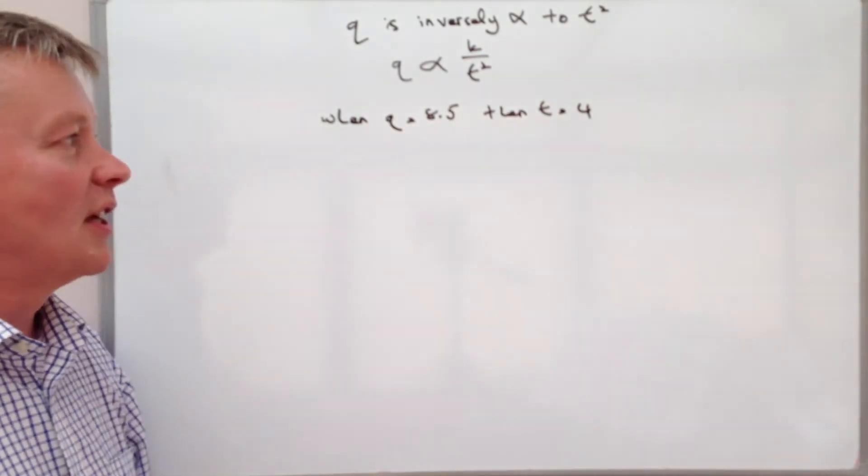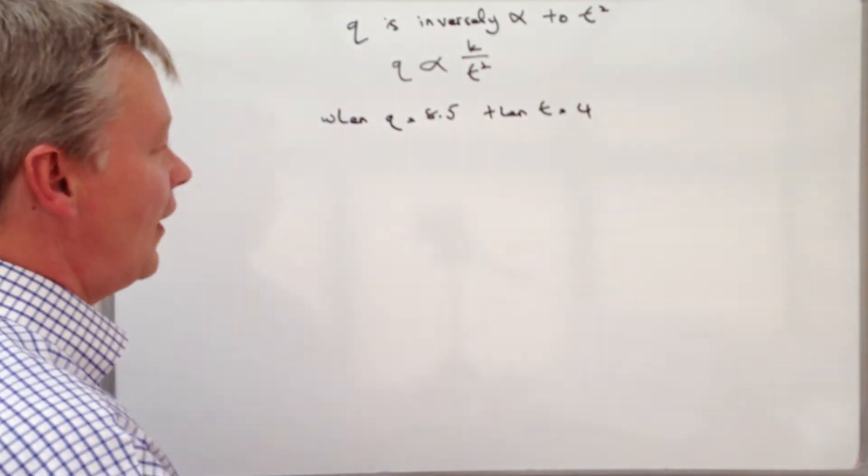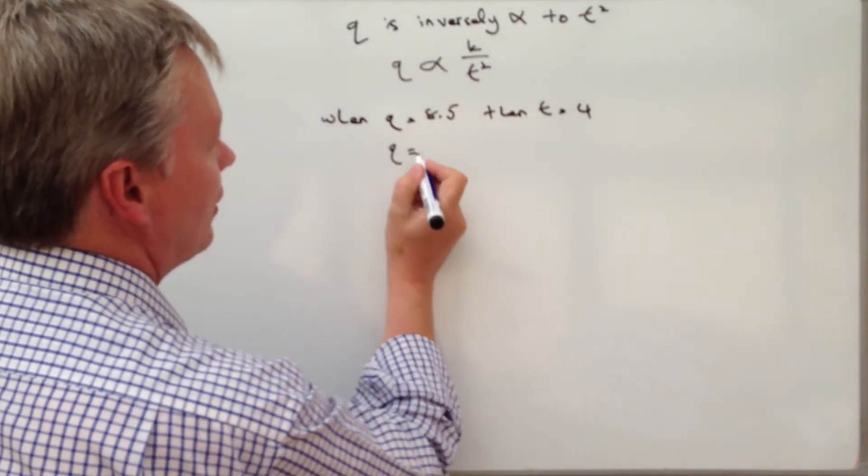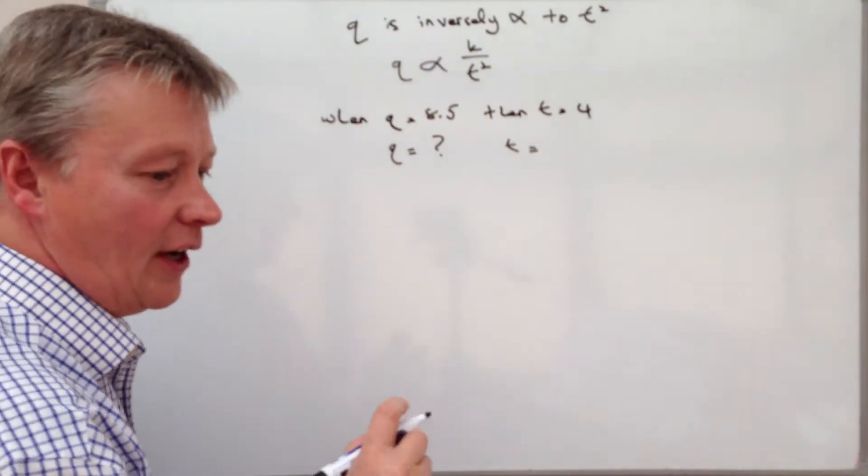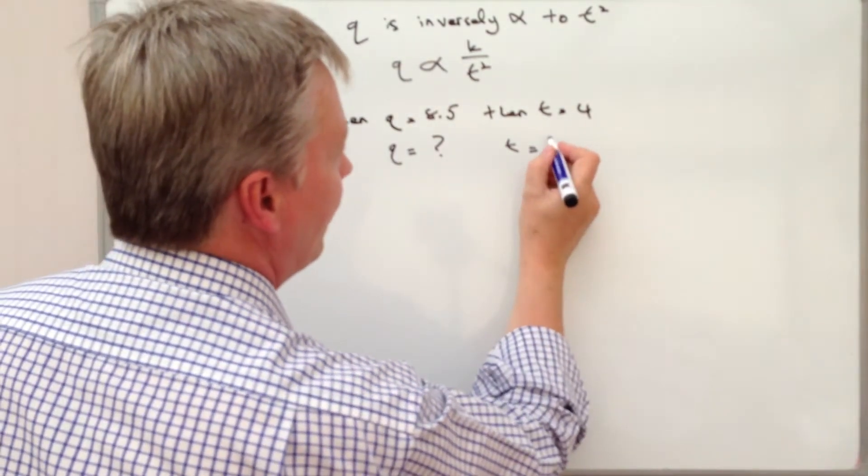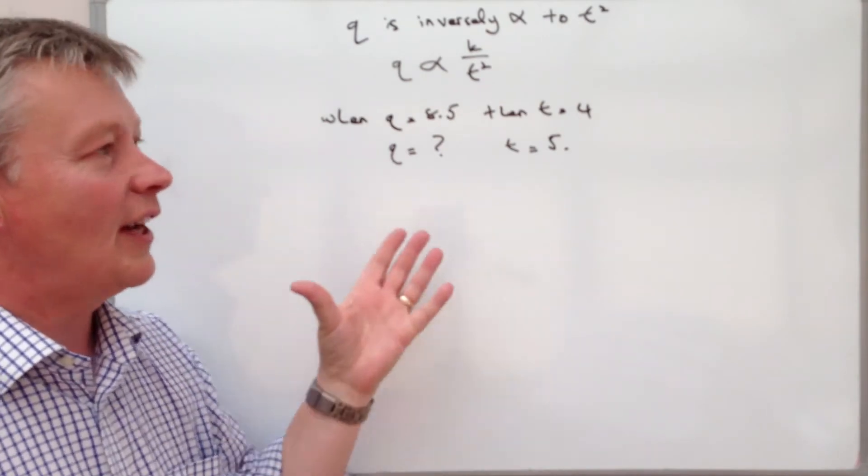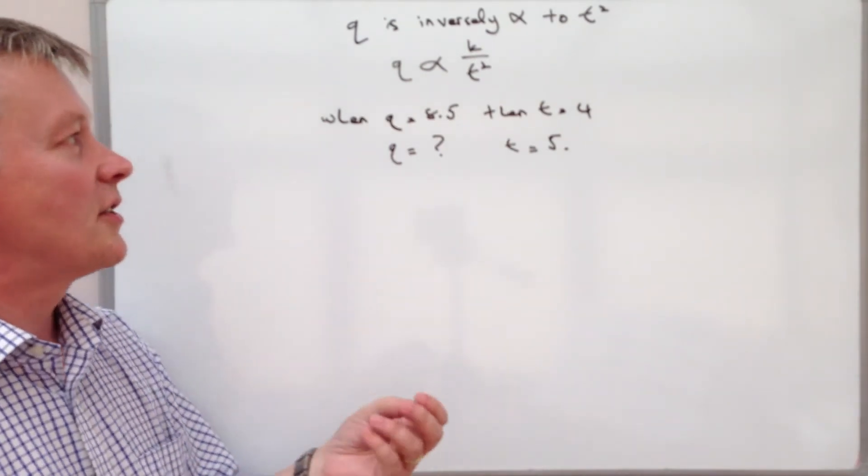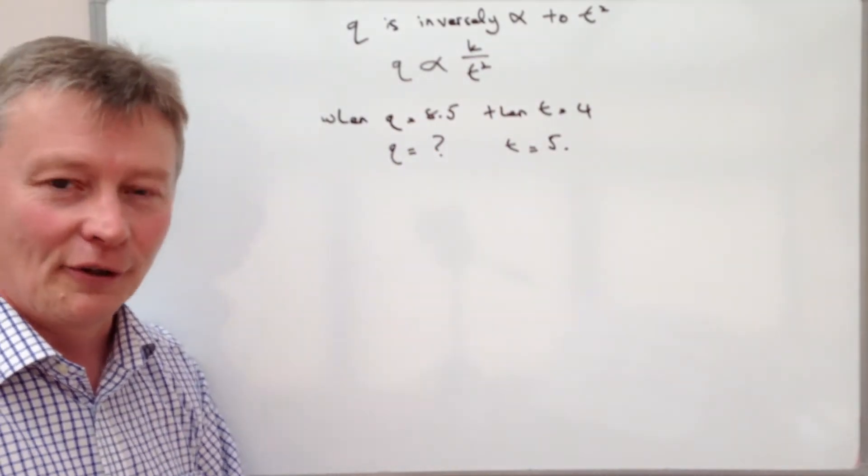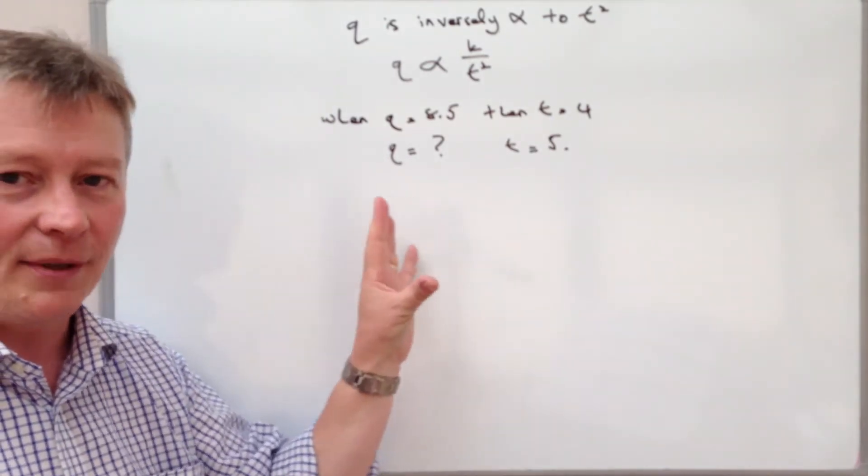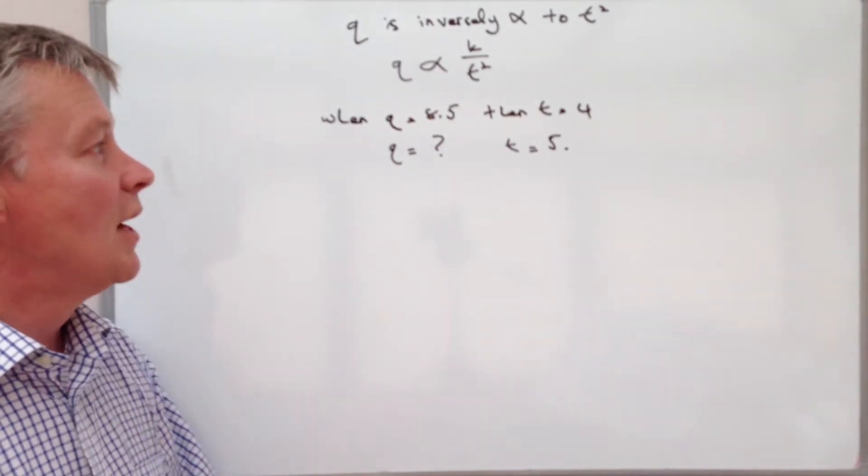And then the question asks us to use that information and calculate a value of Q when T equals 5. This is a fairly typical inverse proportion question. Sometimes they might dress it up with volumes of a sphere or something like that, but essentially it's the same sort of question that you get in most of the GCSE curriculum.